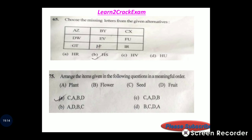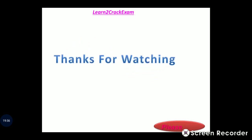Question 75: Arrange the following items in a meaningful order — plant, flower, seed, fruit. The correct order is seed, plant, flower, fruit. Answer: option C.